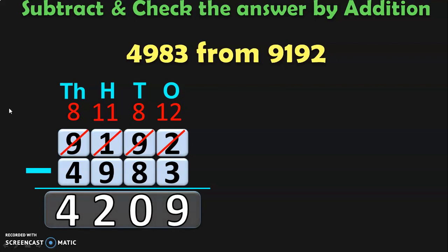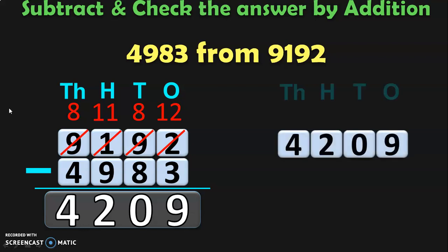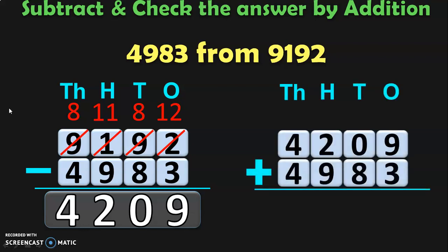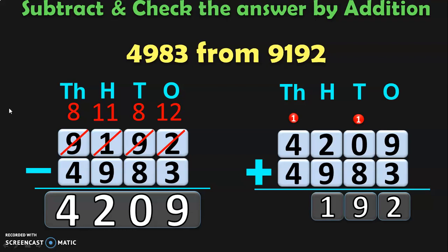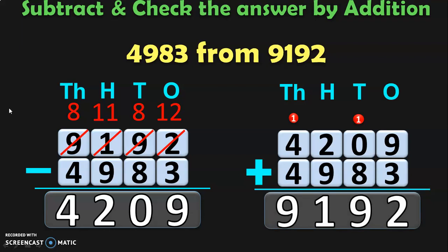Now we have to verify if this answer is correct. Write down the difference and add it to the smaller number, which is 4983. Begin the addition from the 1s place: 9 plus 3 is 12 — write 2, carry over 1. In the 10s place, 1 plus 0 plus 8 is 9. In the 100s place, 2 plus 9 is 11 — write 1, carry over 1. In the 1000s place, 1 plus 4 plus 4 gives 9. So the answer is 9192, which is the bigger number.